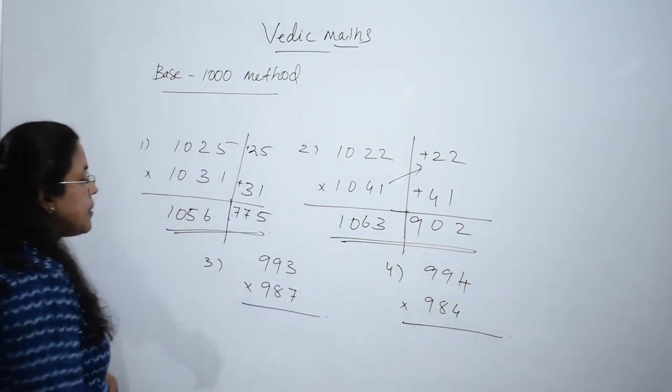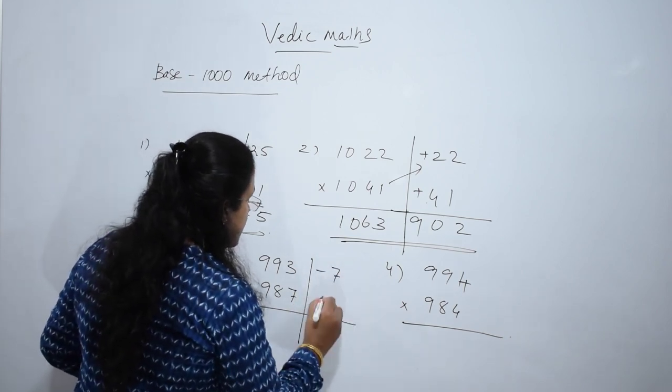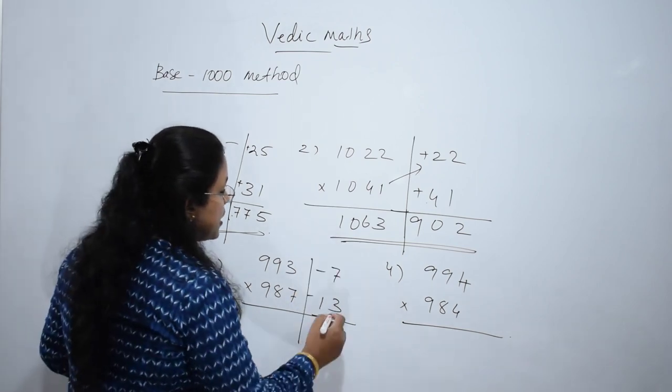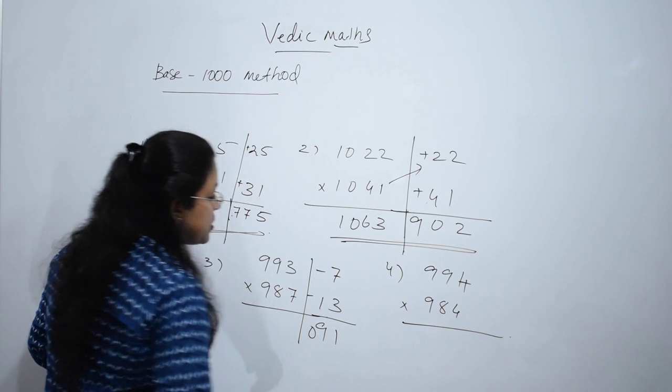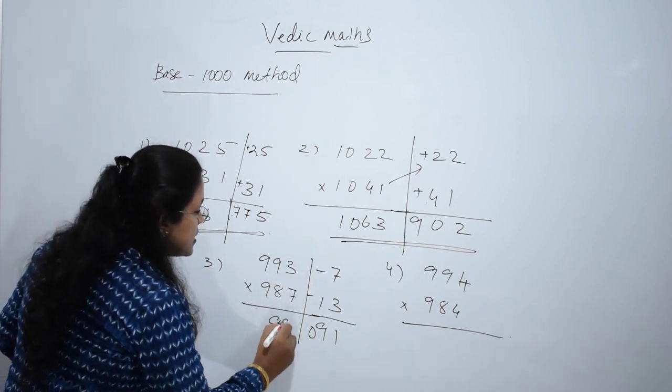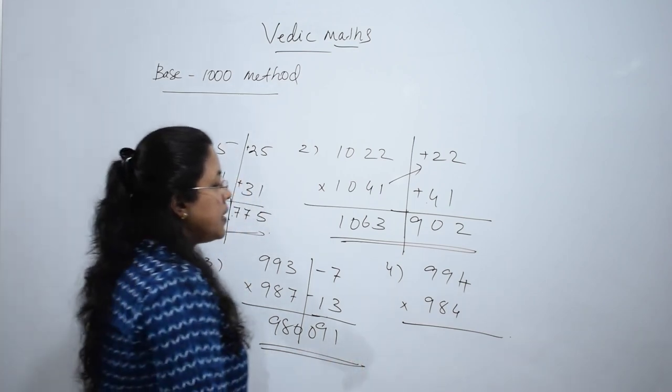Here both the numbers are below 1000, so write the deviations: 7 less and 13 less. Multiply the two: 13 times 7 is 91. Put 0 because it is base 1000. Subtract: the answer is 980091.